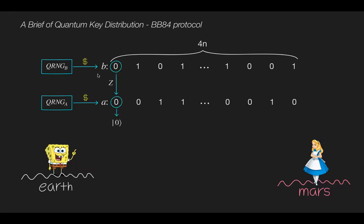For example, if random bits in the string b is 0, Bob chooses the z basis for encoding, then 0 in the string a is encoded in a qubit 0. If random bits in the string b is 1, he chooses the x basis, then 0 in the string a is encoded in a qubit plus.